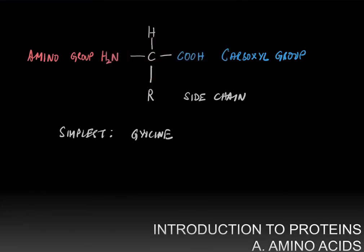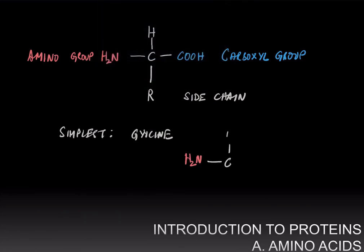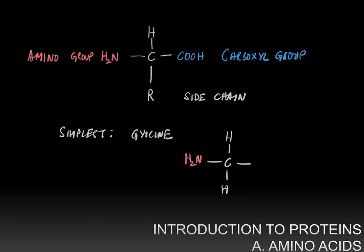And so we have the amino group, and then we have the carbon. The side chain is just a hydrogen atom. And finally, we have the carboxyl group. And this is the simplest amino acid possible, glycine.